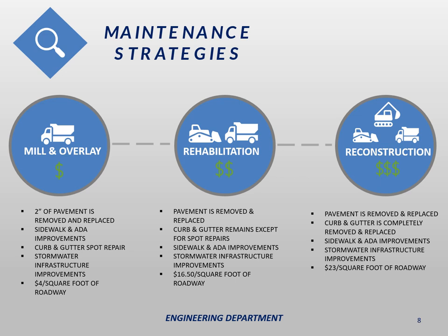A rehab is where we replace the entire pavement section but leave the curb and gutter largely in place. We do spot repairs on the curb and gutter and make ADA updates and storm sewer improvements as well. This project is more involved than a mill and overlay and on average costs about seventeen dollars per square foot of roadway. A reconstruction is the third type, where we completely replace the pavement and the curb and gutter — the most complex project type, typically costing about twenty-three dollars per square foot, almost eight times what a mill and overlay will cost.